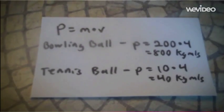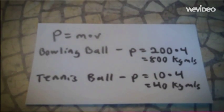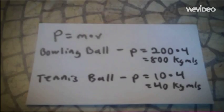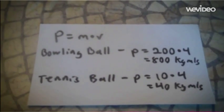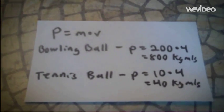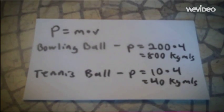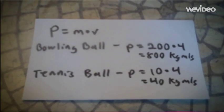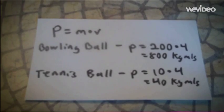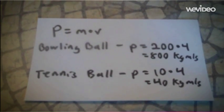The math to prove this is p equals m times v. So for the bowling ball, p equals 200 times 4, which is 800 kilograms meters per second. For the tennis ball, p equals 10 times 4, which is 40 kilograms meters per second. The tennis ball has much less momentum than the bowling ball, so people are less afraid of it.